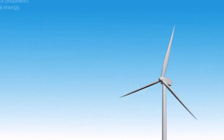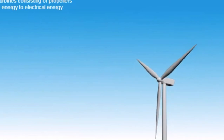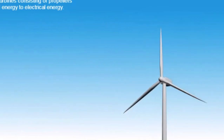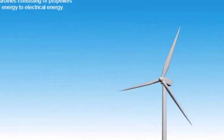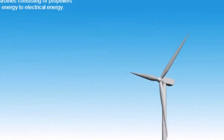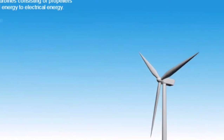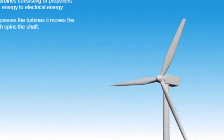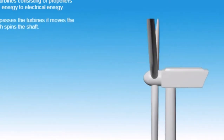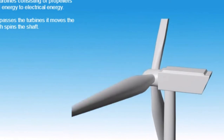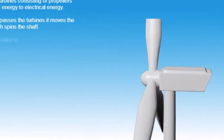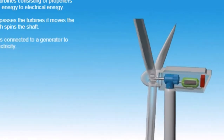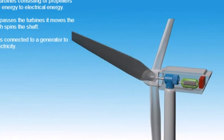Large wind turbines consisting of propellers convert wind energy to electrical energy. As the wind passes the turbines, it moves the blades which spins the shaft. The turbine is connected to a generator to generate electricity.